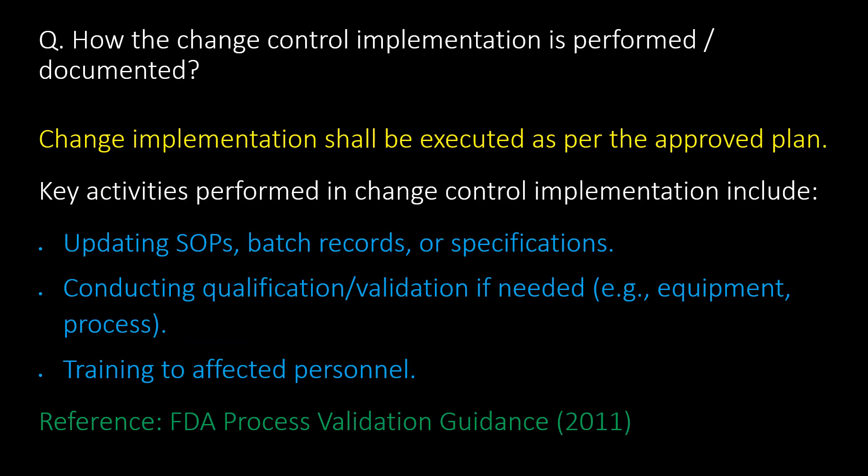How is change control implementation performed and documented? Change implementation shall be executed as per the approved plan. Key activities include updating SOPs, batch records, or specifications; conducting qualification or validation if needed for equipment and process; and training affected personnel. Reference: FDA Process Validation Guidance 2011.